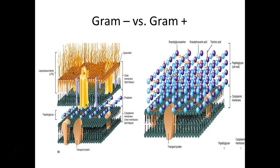That outer membrane is a protective layer, and when cells are alive it's a really hard barrier for substances to get in and out of. Gram negatives have large protein complexes called porin proteins that literally open pores in the outer membrane layer so things can get in and out. If they have a peptidoglycan layer, it is sandwiched between these two membranes in what's called the periplasm — and it's a very thin layer.